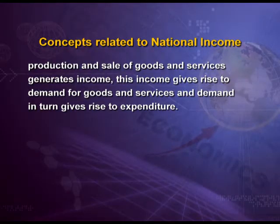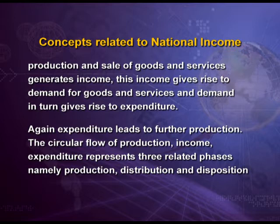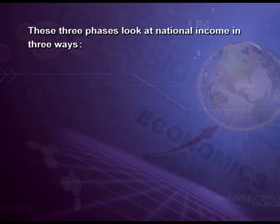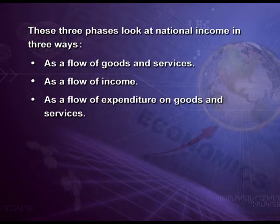Production and sale of goods and services generates income. This income gives rise to demand for goods and services, and demand in turn gives rise to expenditure. Again, expenditure leads to further production. The circular flow of production, income, and expenditure represents three related phases, namely production, distribution, and disposition. These three phases look at National Income in three ways: as a flow of goods and services, as a flow of income, and as a flow of expenditure on goods and services.